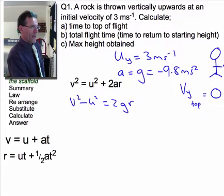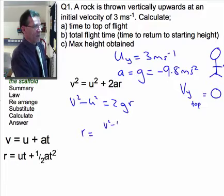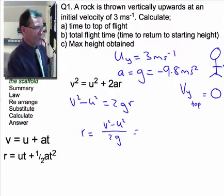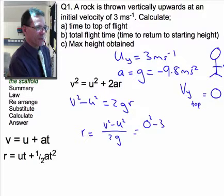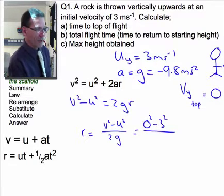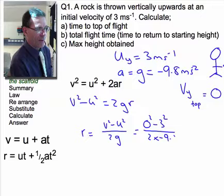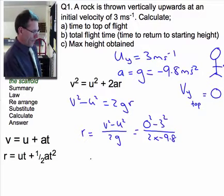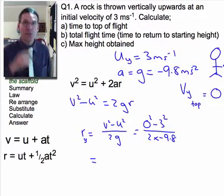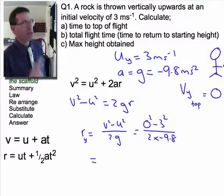I'll rearrange that, so that r is gonna be v squared minus u squared divided by 2g, which is gonna be zero squared minus three squared, divided by two times minus 9.8. And that will be the displacement, the maximum height that it gets to compared to the ground.